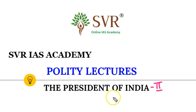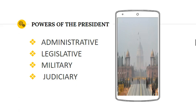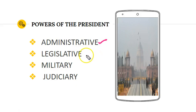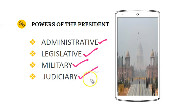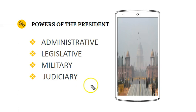Now in this article, we will discuss about the powers given to the President of India in detail. The President of India has a wide array of powers and it is classified mainly into four types: the first is administrative powers, the second is legislative powers, the third is military powers, and the fourth is judiciary. We will discuss all these powers in a detailed manner.